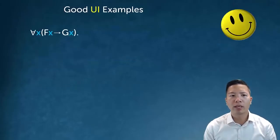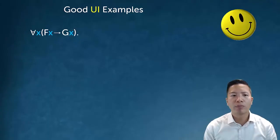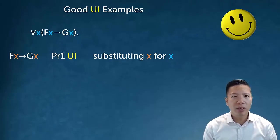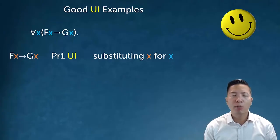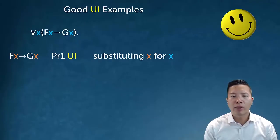Let's look at some good UI examples. I have 'for all x, Fx arrow Gx.' In the first example, I instantiate to 'Fx arrow Gx,' substituting x for x. In the original premise, the letter x is bound to the quantifier — there's no difference between 'for all x,' 'for all y,' or 'for all z'; it's saying all F's are G's. When I instantiate, the x becomes free and the meaning changes: x is an F and therefore x is a G.